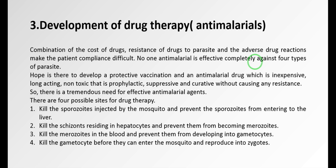The third site for drug intervention is the site where the drug can kill the merozoites in the blood and prevent them from developing into gametocytes. If you kill the merozoites in the blood, they cannot further form gametocytes. The fourth and last site is to kill the gametocytes before they can enter the mosquito and reproduce into zygotes. If the gametocytes are killed, they cannot enter the mosquito and sexual reproduction cannot take place.